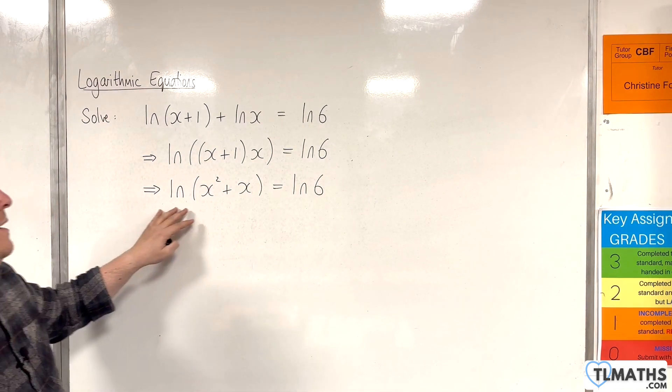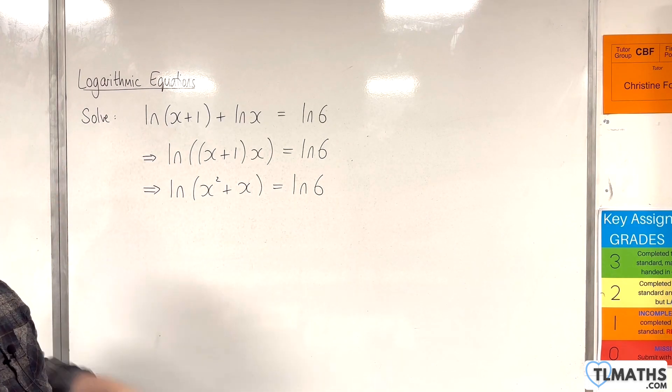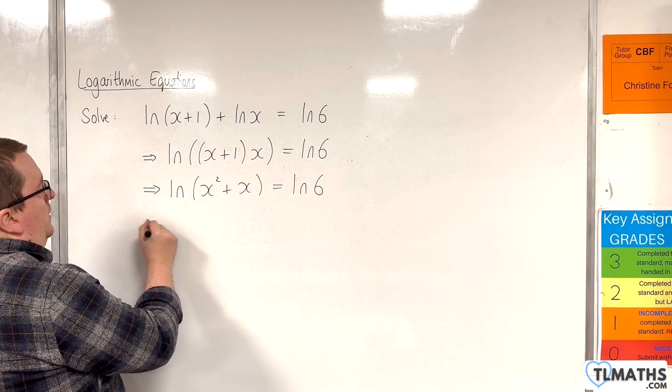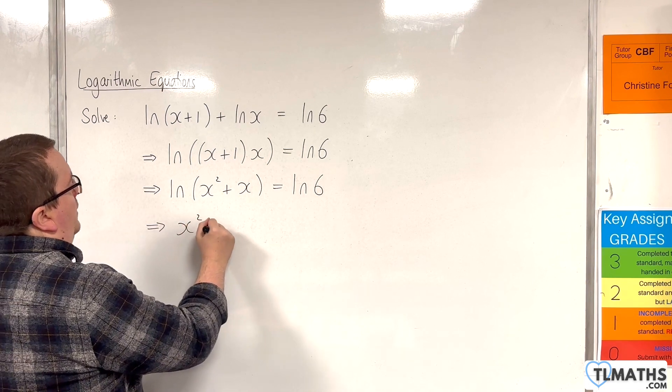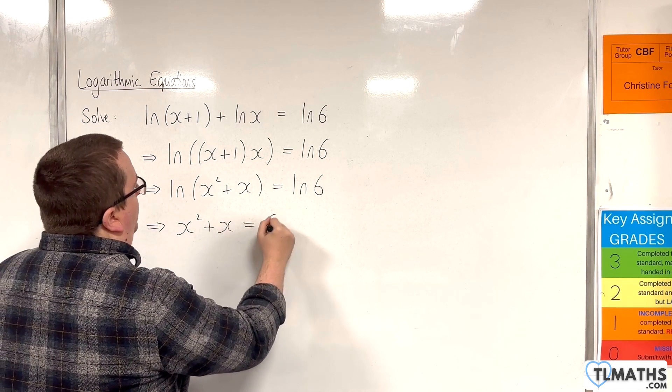We can do that by essentially doing e to the power of both sides, which will knock out the logs. So we'll have x squared plus x would be equal to 6.